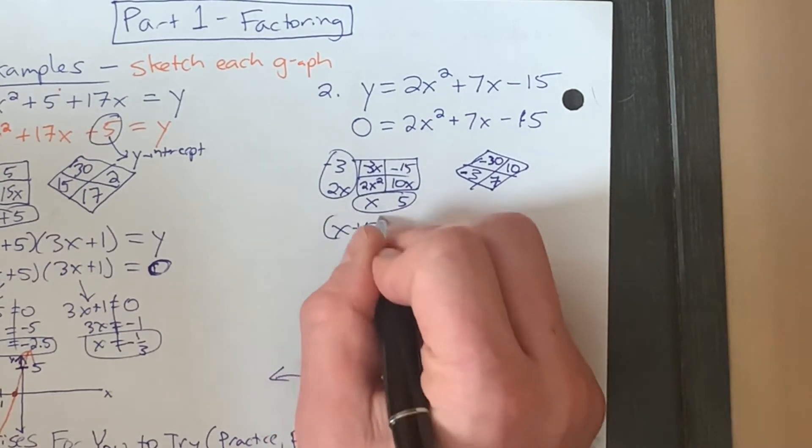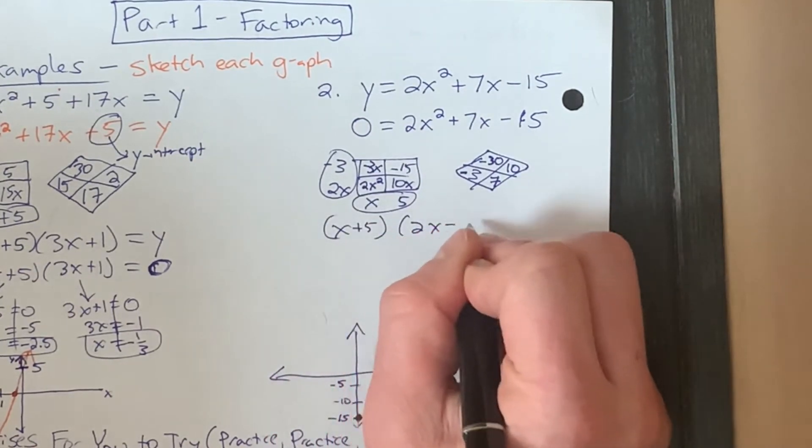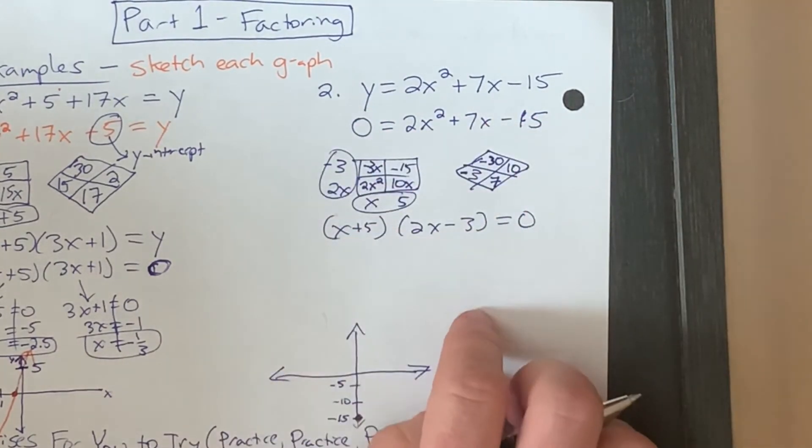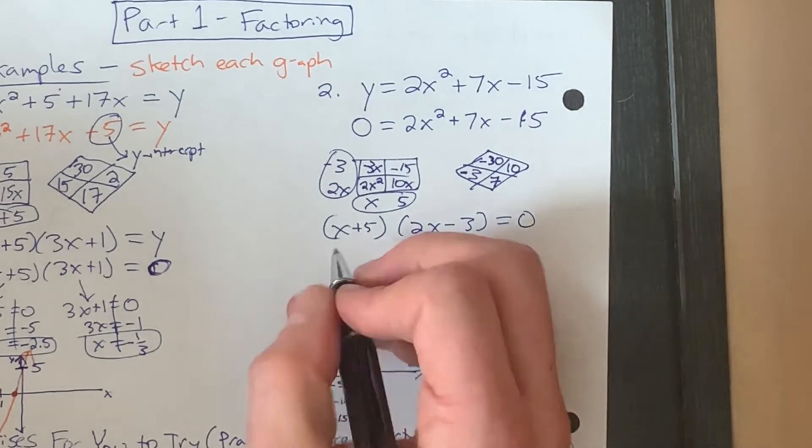x plus 5 times by 2x minus 3. And that's all equal to zero. So I just kind of flipped it around here. And using this, we can get our roots.